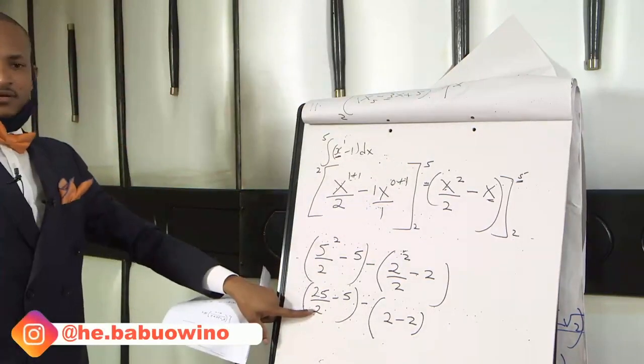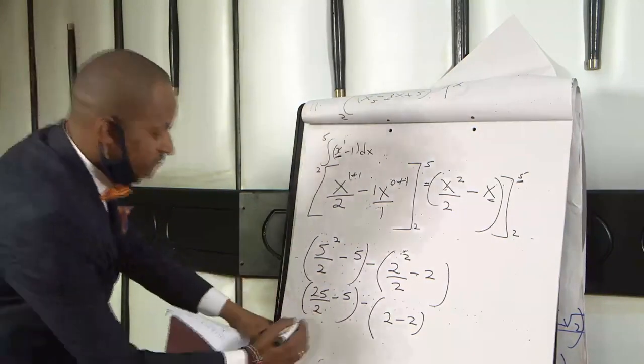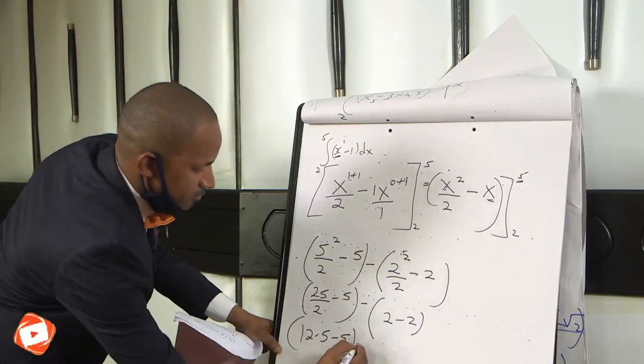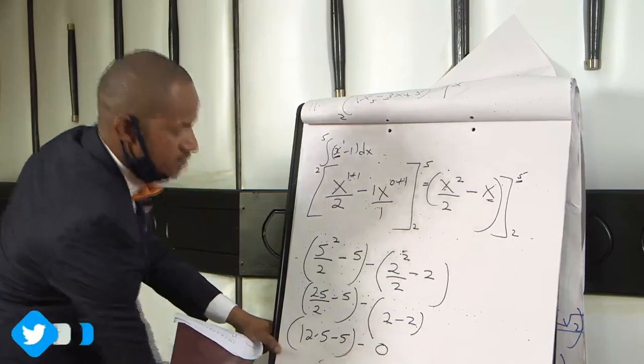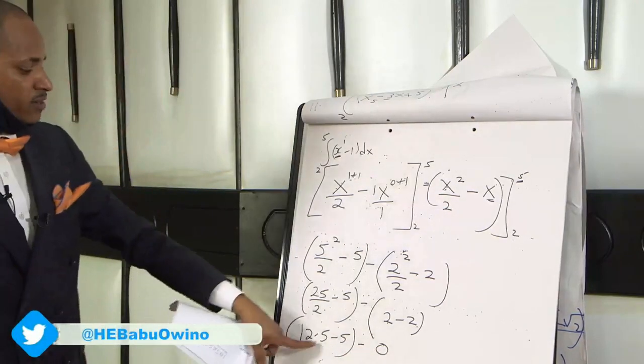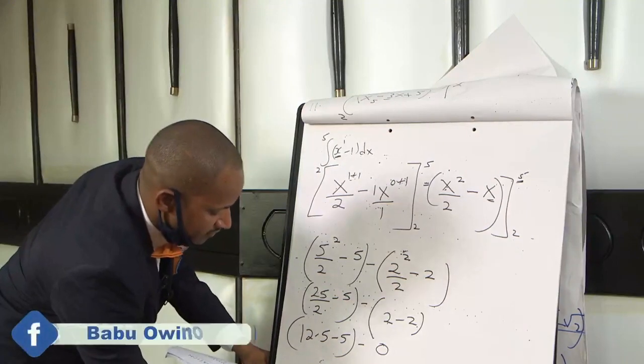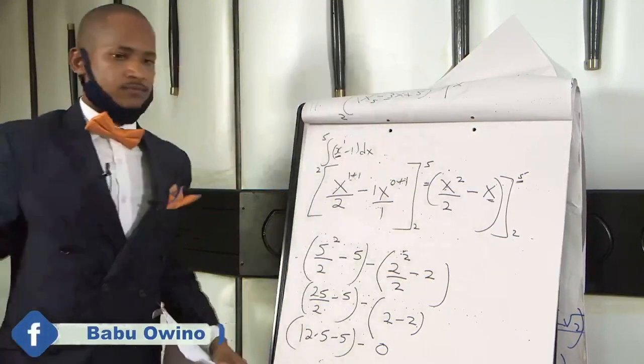25 divided by 2 is 12.5. So 12.5 minus 5 minus. 2 minus 2 is 0. Therefore 12.5 minus 5 you get 7.5. That is the value.